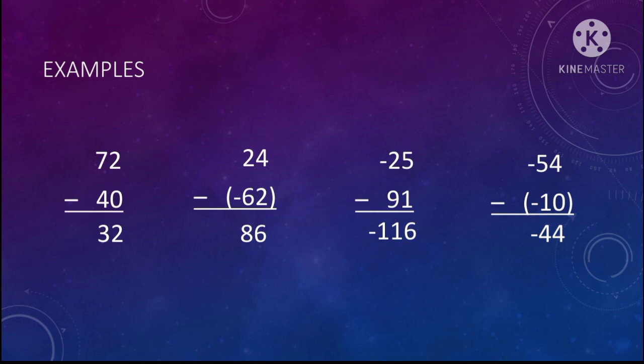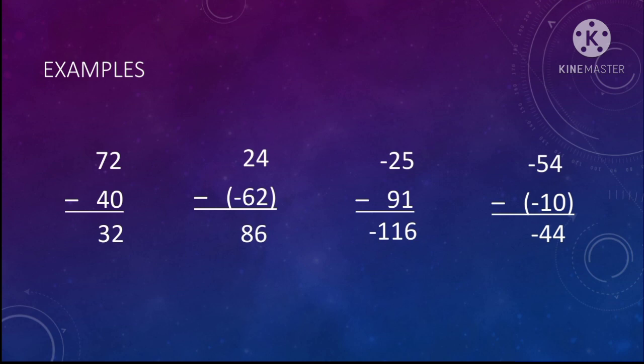Next is negative 25 minus 91 — negative minus positive. Positive multiplied by negative is negative, so it is similar to negative 25 plus negative 91, and that would be equal to negative 116.